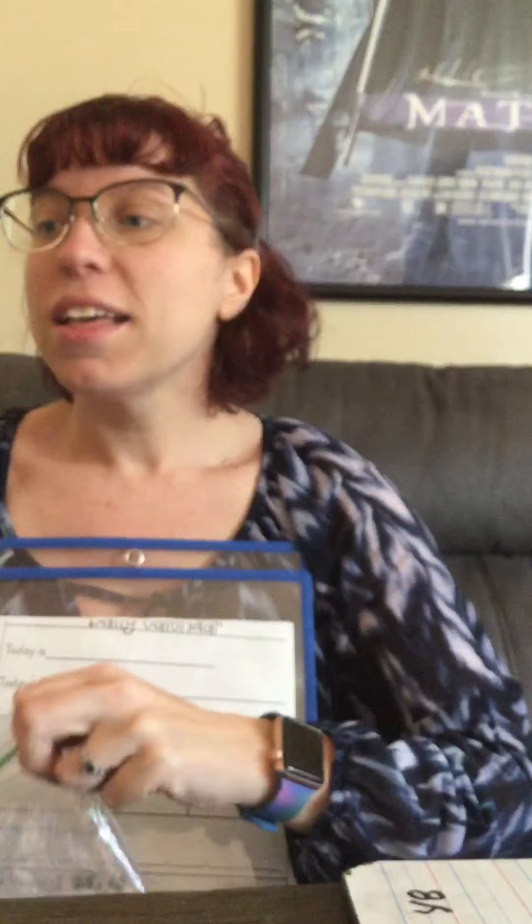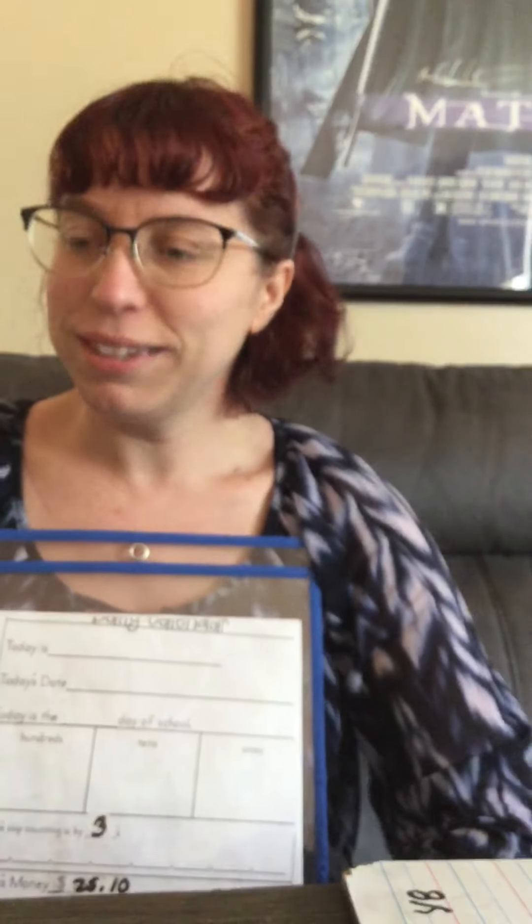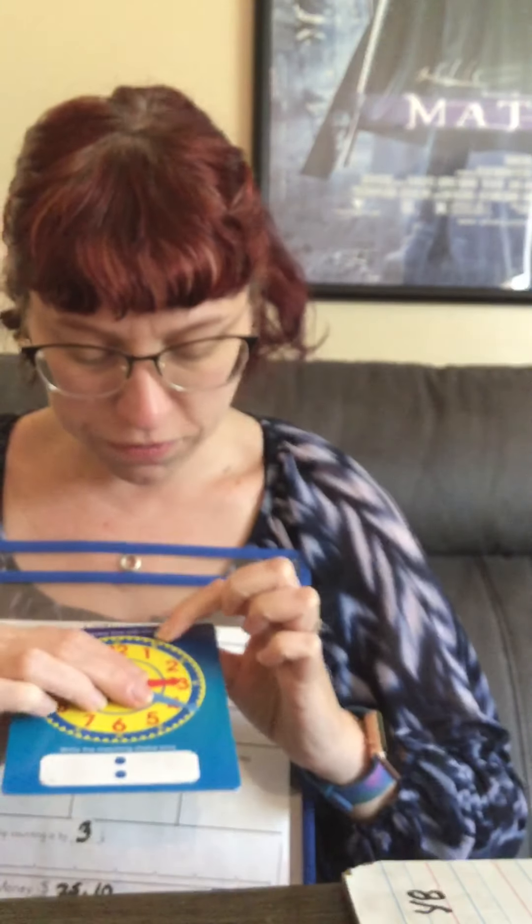On to our clock. The time today is seven forty-five. Always start with the minute hand on the clock. We're gonna count: five, ten, fifteen, twenty, twenty-five, thirty, thirty-five, forty, forty-five. So we're gonna bring the big hand over to the nine — big hand pointing exactly on the nine.